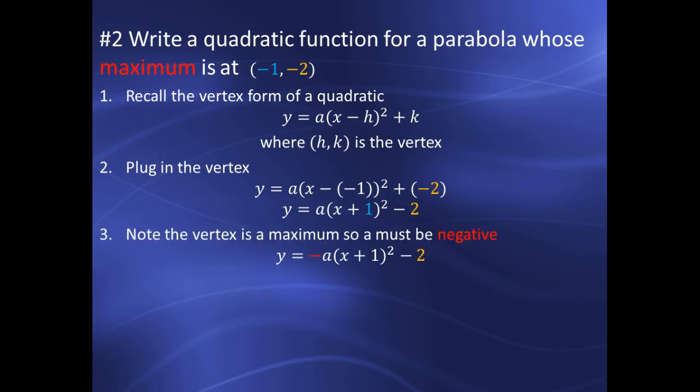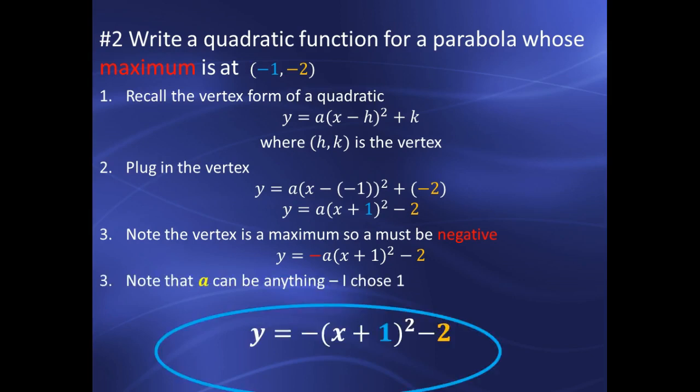Note that it said it was a maximum. So that means that A must be negative. The actual question on the quiz said write a possible quadratic function. It doesn't tell us about the value of A. That means I get to plug in anything I want for A. And as long as it's negative, it's okay. So I'm plugging in an easy math number of negative 1. And that leads me to this final answer.